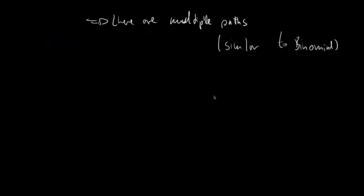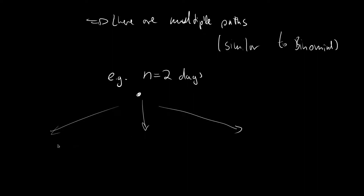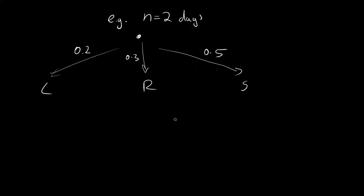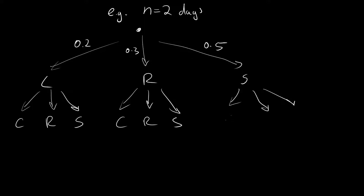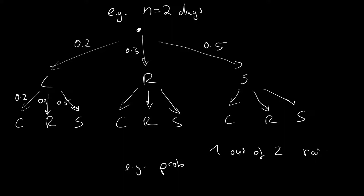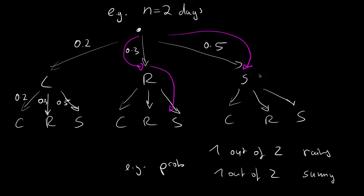Let us look at an example of what I mean by multiple paths. Consider observing for two days. The first day can be cloudy with probability 0.2, rainy with 0.3, or sunny with 0.5, and after each day the same states are equally likely again. We want to look at the probability that 1 out of 2 days is rainy and 1 out of 2 is sunny. We can have two possible paths: first rainy then sunny, or first sunny then rainy.